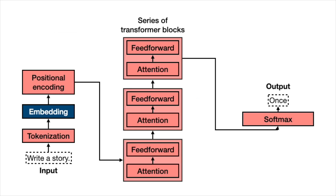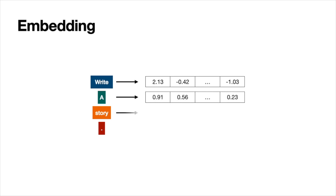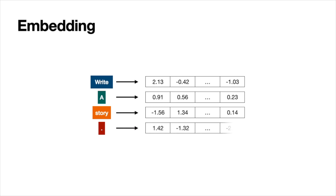Now let's get to the embedding. You may have seen a video about embeddings, and if you haven't, the link is in the comments. Embeddings really turn text into numbers. For example, 'write' goes into a bunch of numbers in the thousands, 'a' goes into a bunch of other numbers, 'story,' and then the period. The point of embeddings is that similar words go to similar numbers. Basically, an embedding is a really good way to turn words into lots of numbers.